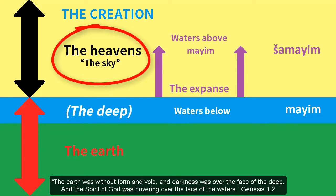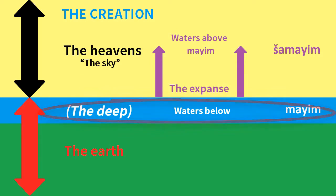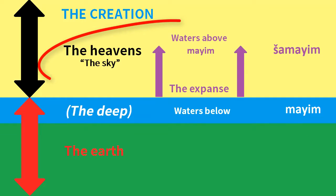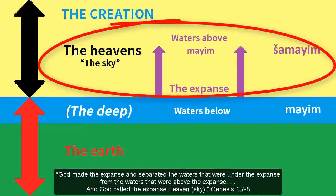The earth was without form and void, and darkness was over the face of the deep. And the Spirit of God was hovering over the face of the waters. The word expanse, formerly translated as firmament, is defined by Genesis as the sky, which is also called the heavens. God made the expanse, and separated the waters that were under the expanse from the waters that were above the expanse.